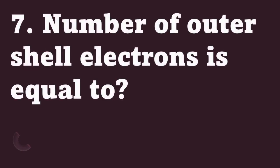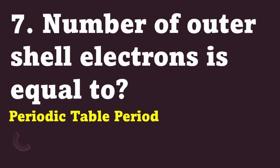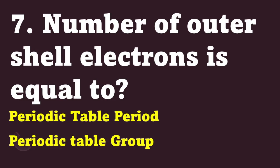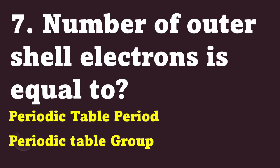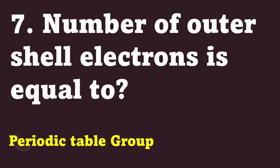For number seven. The number of outer shell electrons is equal to — is it the periodic table period? Or is it the periodic table group? The correct answer is: periodic table group.